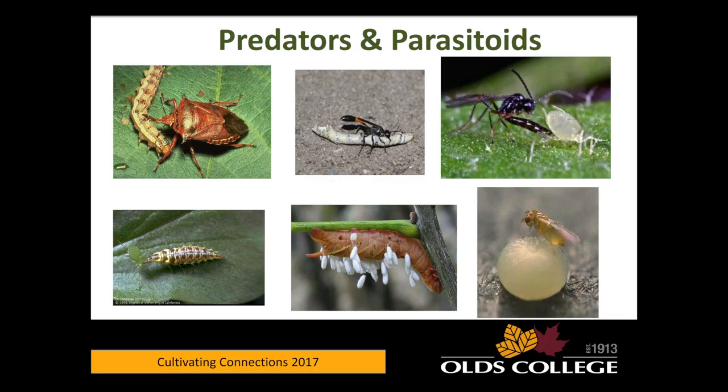Predators and parasitoids — lots of good things. Not all stink bugs are bad — some are good because they're feeding on soft-bodied insects. There are wasps that provision their nests with prey, and parasitoid braconid wasps: a wasp lays an egg, polyembryony divides it again and again, and multiple individuals come out of a single hornworm.